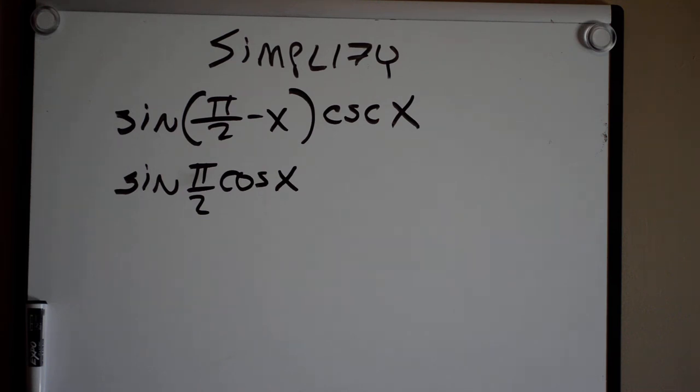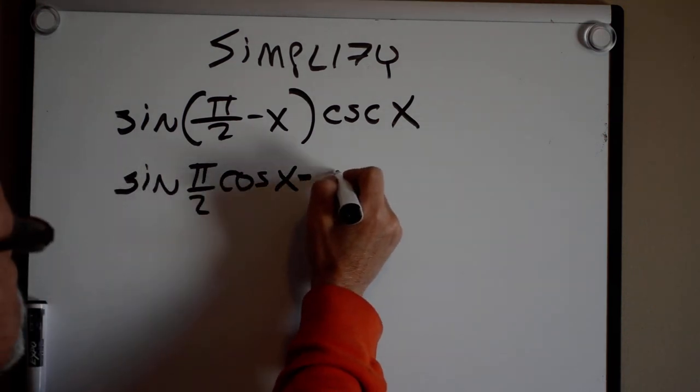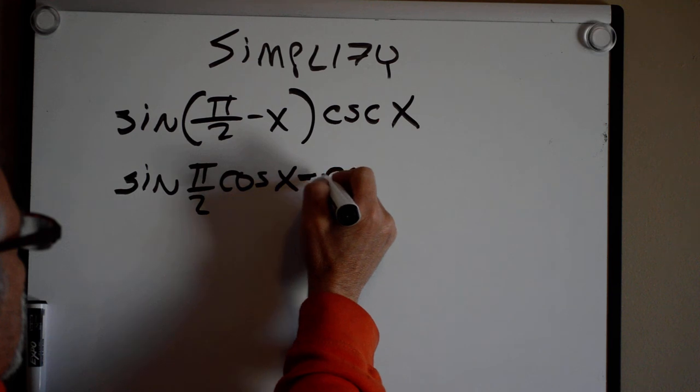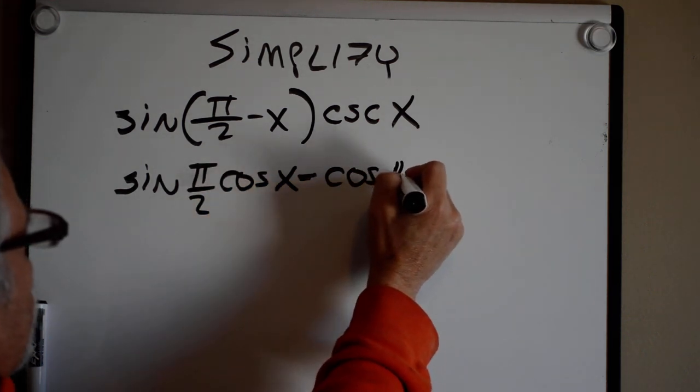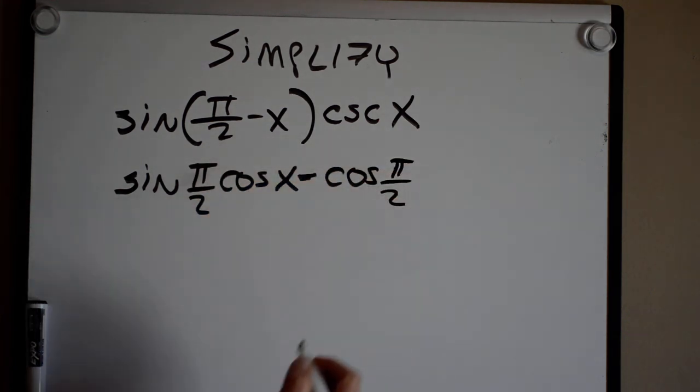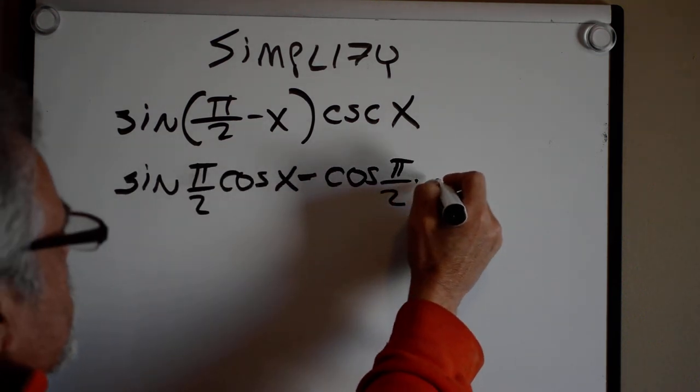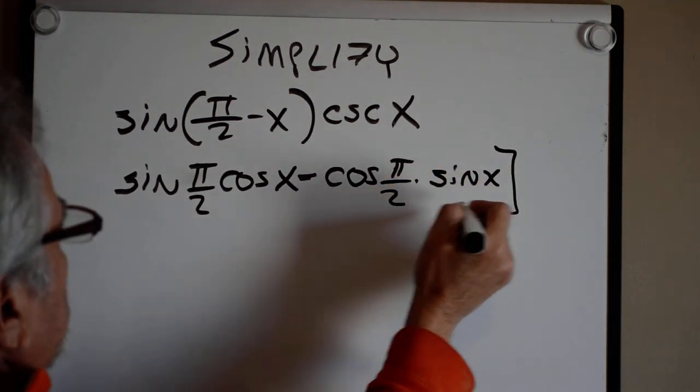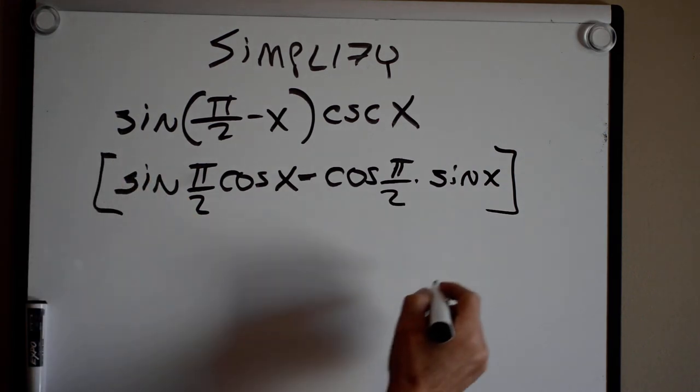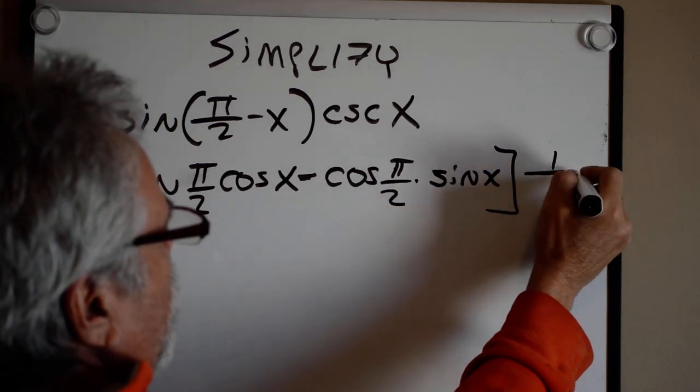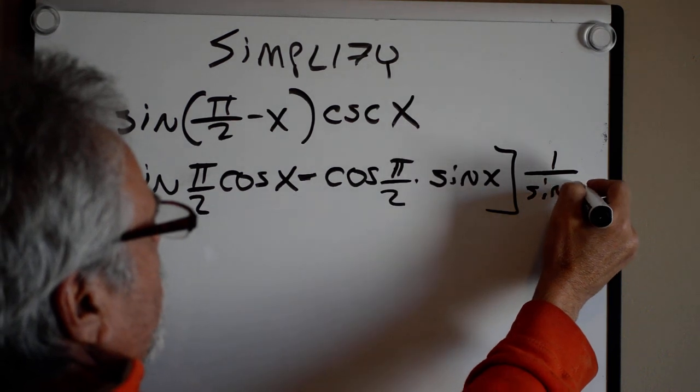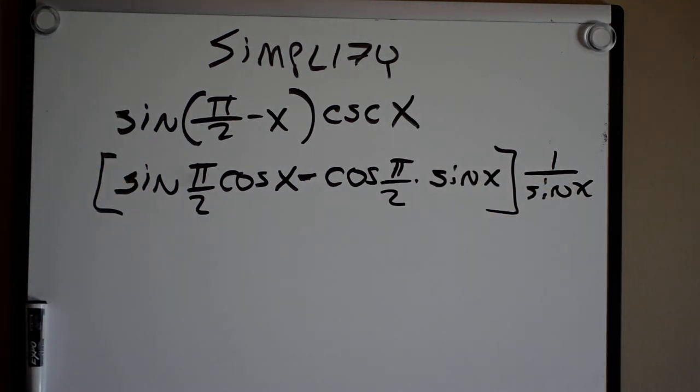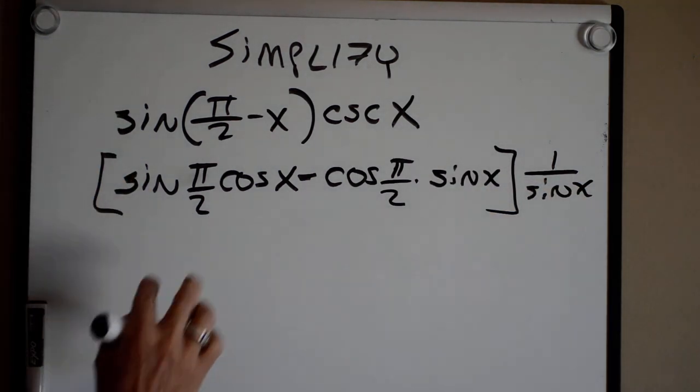This is the sine of pi over 2 times the cosine of x minus the cosine of pi over 2 times the sine of x. And that is all going to be multiplied by 1 over the sine of x. Remember, cosecant x is the same as 1 over sine x.